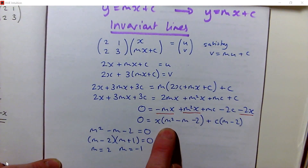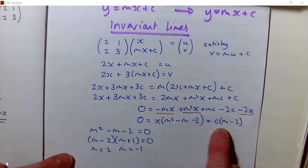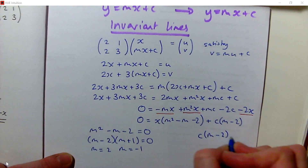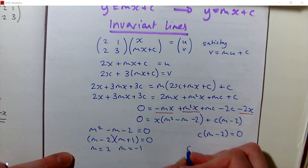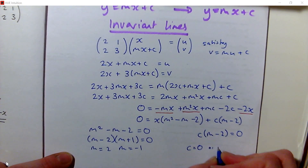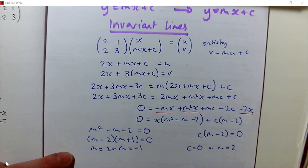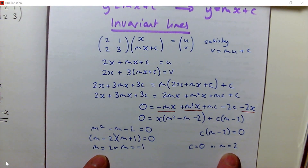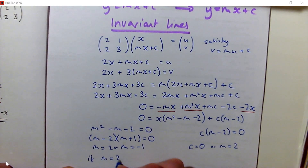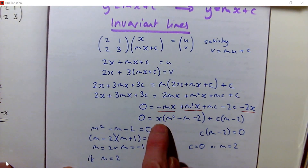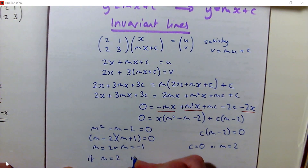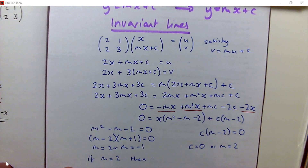Both conditions must hold simultaneously. If m equals 2, then m squared minus m minus 2 equals 0 and c(m minus 2) equals 0 are both satisfied automatically. So with m equals 2, any value of c works, and we have found an invariant line.